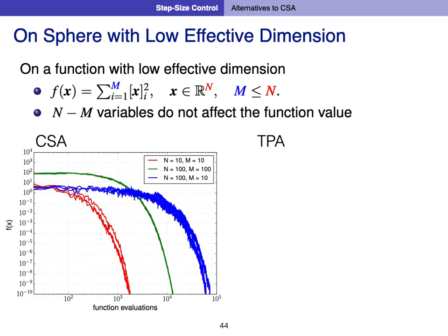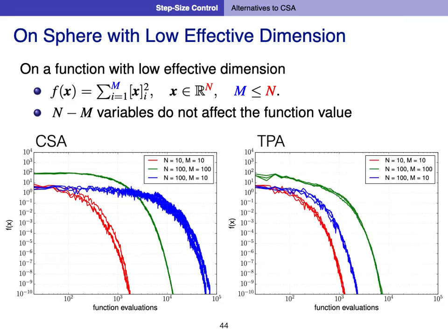A defect of CSA is shown for a function with low effective dimensionality — where the function has high dimension but only a few dimensions actually affect the function value. CSA works comparatively poorly in this case due to noisy information from ineffective dimensions, performing even worse than expected for the full-dimensional problem. TPA, on the other hand, performs almost as well as if run on the lower-dimensional subspace problem only.